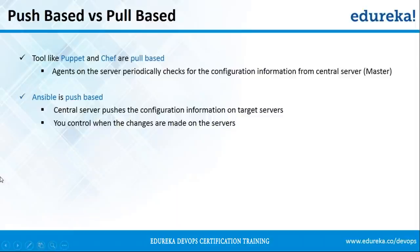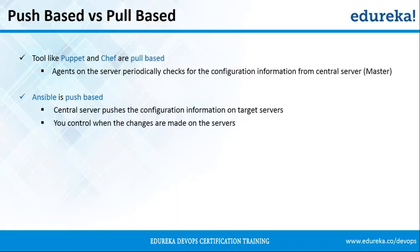Let's look at push-based versus pull-based configuration management. Tools like Puppet and Chef are pull-based, whereas Ansible is push-based. In Puppet and Chef, agents are present — Puppet has the Puppet Agent and Chef has the Chef Client. These agents constantly poll the central server periodically for any configuration information, and whenever they find configuration changes, they pull those changes and get them applied on your node machines. In Ansible, since there are no agents present, whenever you want to make changes, you can push those configurations directly whenever you want — you have full control.